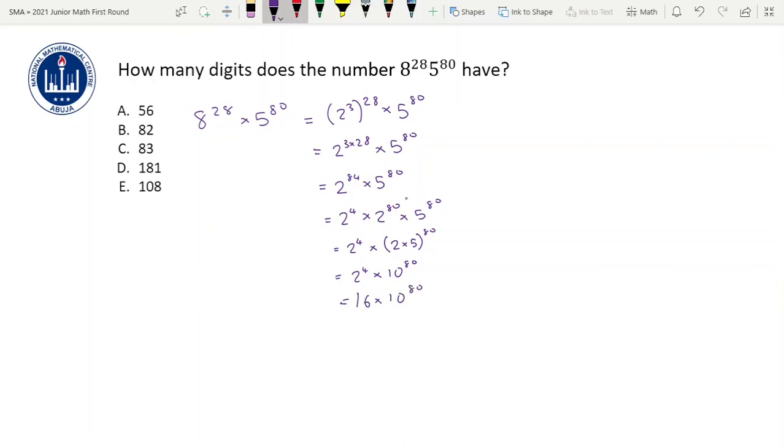So if you want to write 16 times 10 to the power 80 out explicitly, it's going to be 16 followed by 80 zeros. So you have 16,000 and then many more zeros. It's just like when you multiply 2 by 100, this would just be 2 followed by 2 zeros. If you multiply 2 by 10 raised power 5, this would just be 2 followed by 5 zeros. But here you are multiplying 16 by 10 raised power 80, so this is going to be 16 followed by 80 zeros.